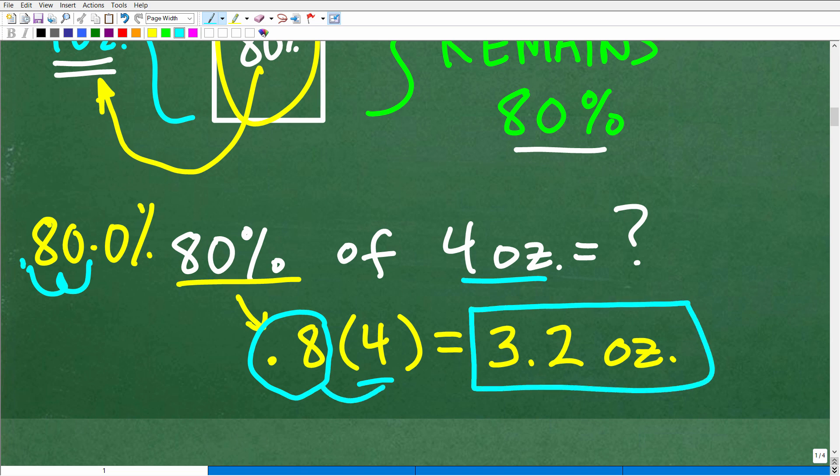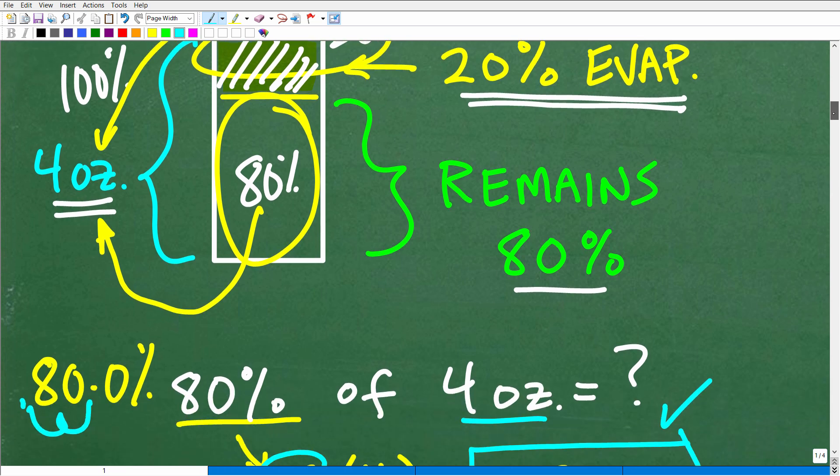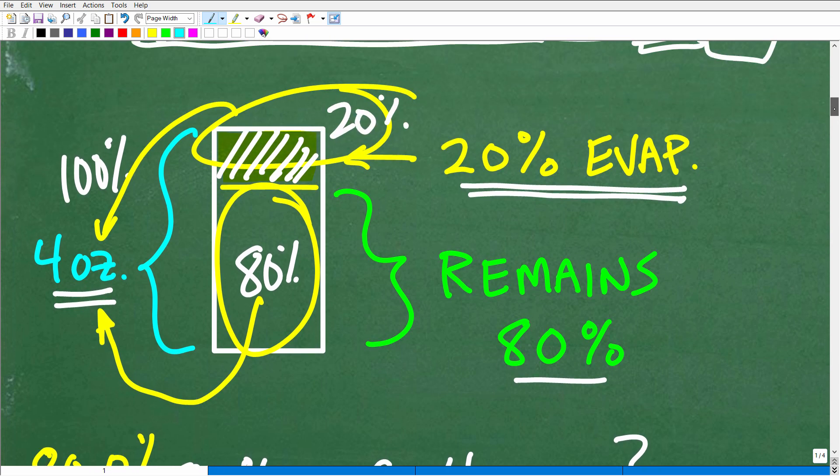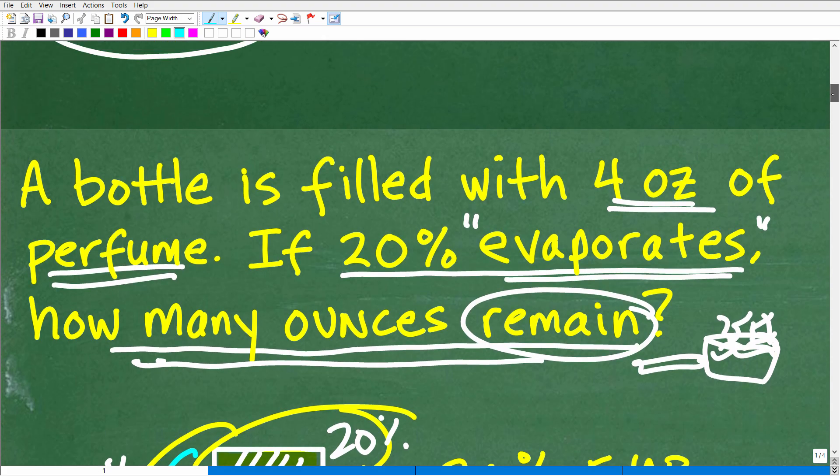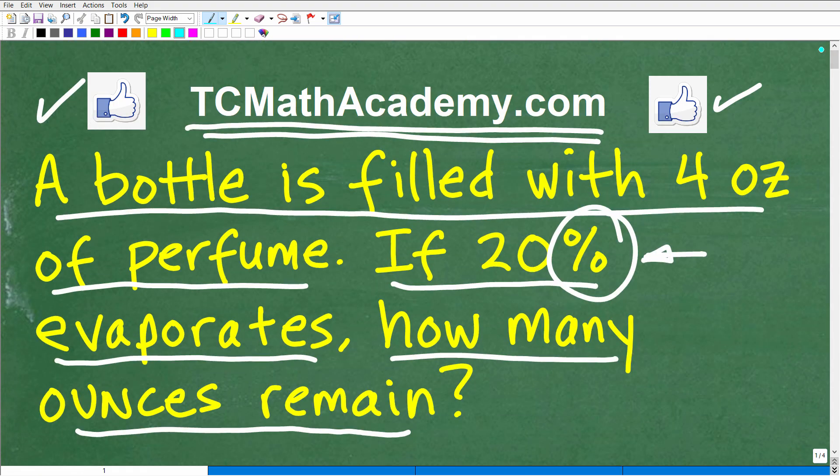So 0.8 times four is 3.2. 3.2 ounces. So that is the correct answer. Again, hopefully most of you got this correct, but for those of you that maybe did this real quick and you just found 20% of the four ounces, I'm telling you right now, a lot of people made that error.